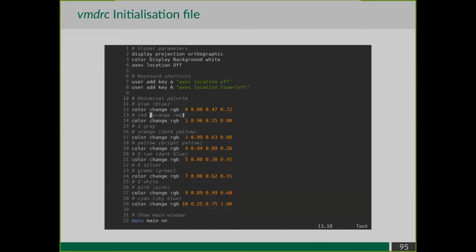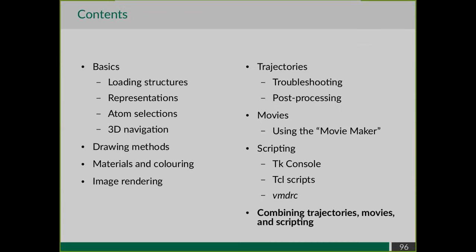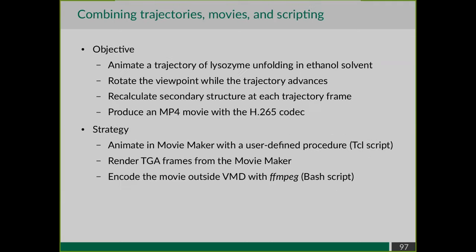Here is a simple example of a VMDRC: set orthographic display projection instead of perspective, a white background, no axis display, add keyboard shortcuts to show or hide the axis, and redefine some colors. Always end your VMDRC with 'menu main on' to show the main VMD window.